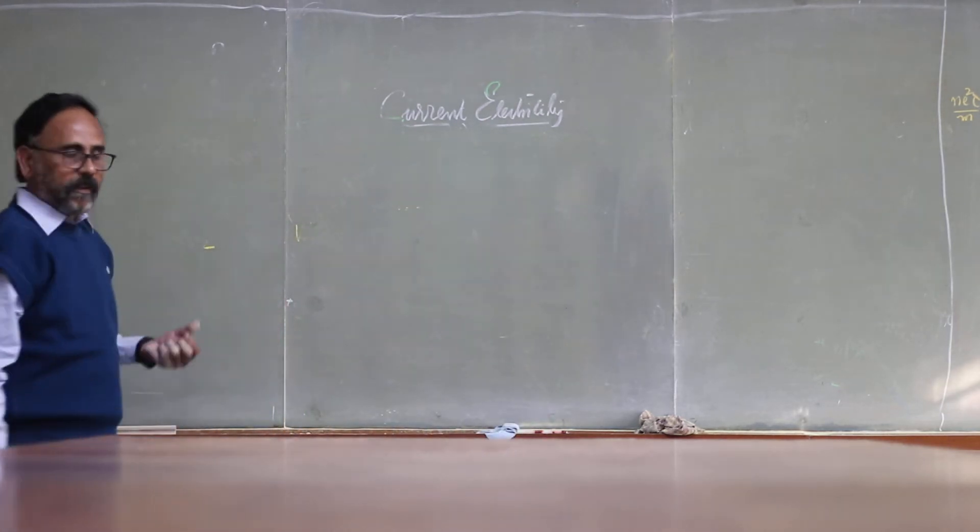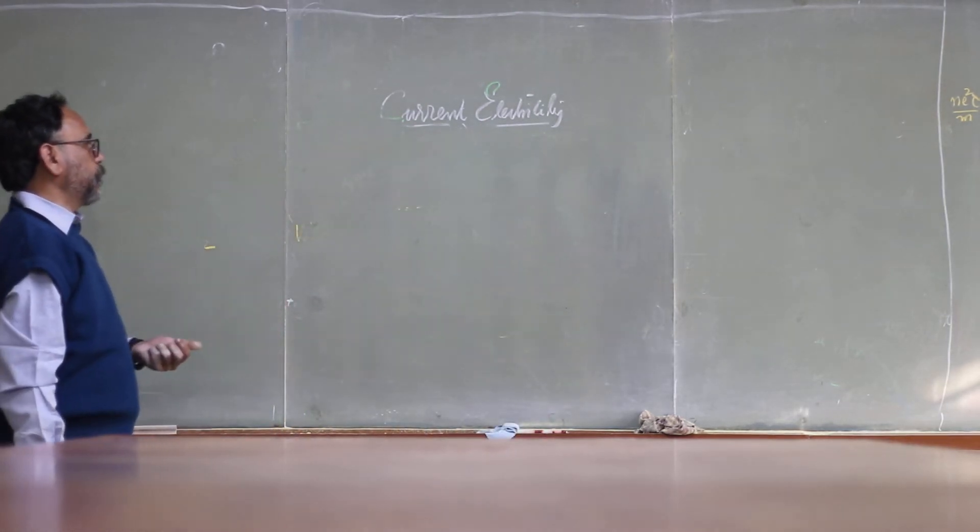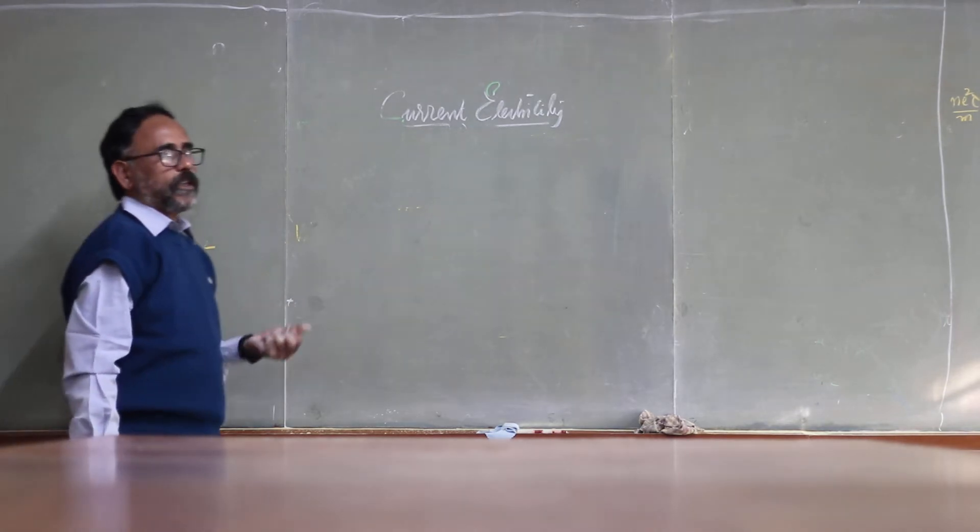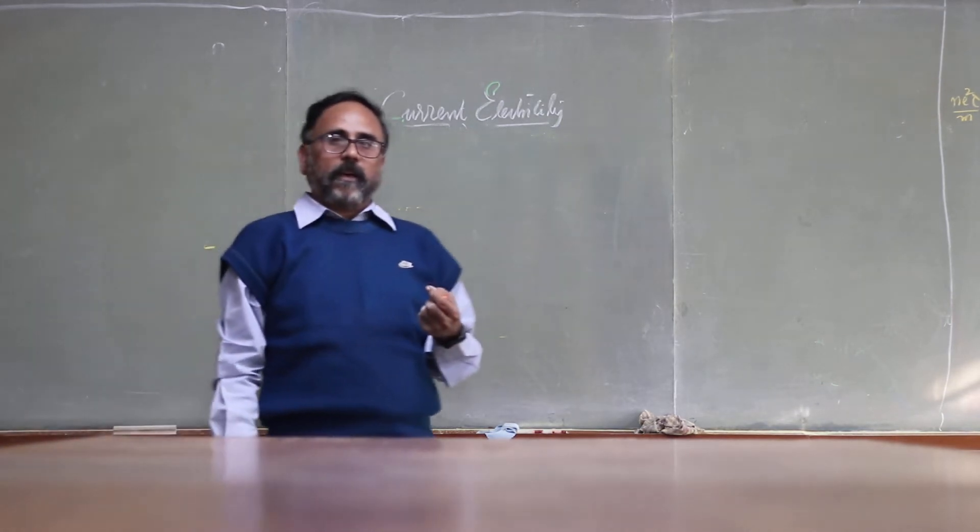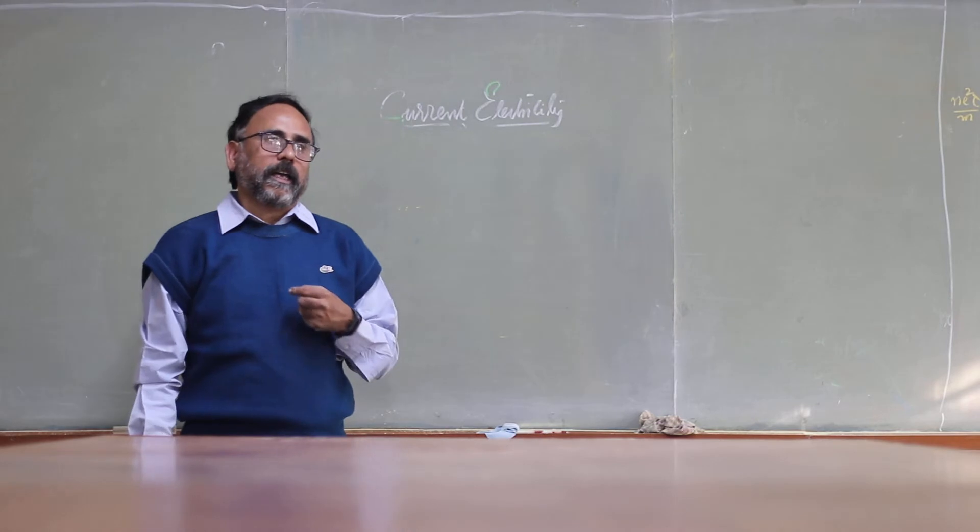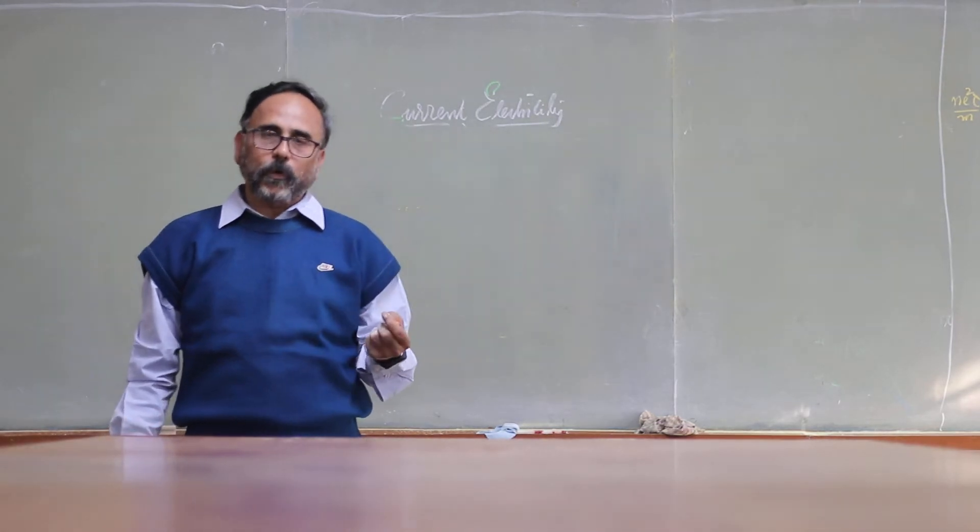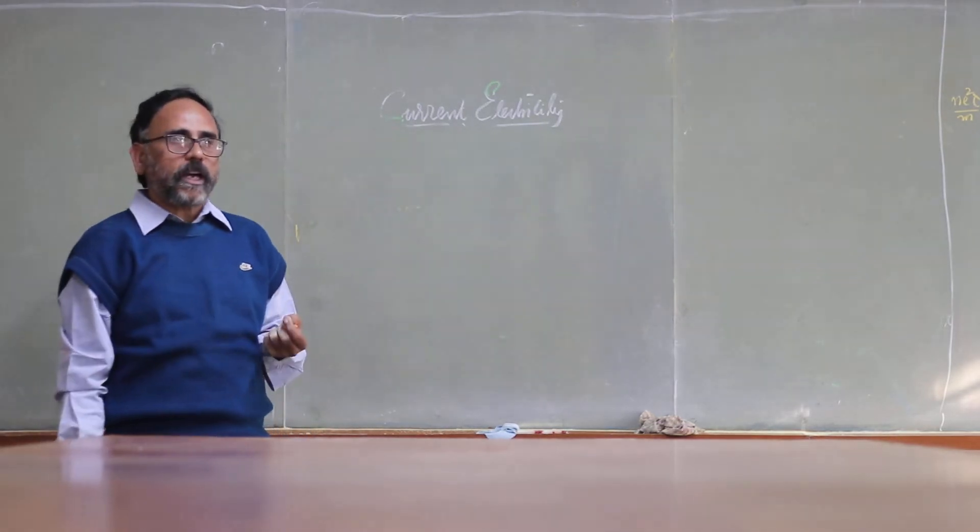So now let us derive the principle of the potentiometer. When a constant current is passing through a wire of uniform area of cross section,